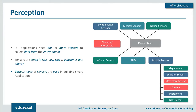RFID — radio frequency identification — gathers significant attention. Unlike a traditional barcode, it does not require line-of-sight communication between the tag and reader, and can identify itself from a distance without human intervention. RFID comes in two types: active tags, which have a power source, and passive tags, which do not. Near RFID uses a coil with AC current to generate a magnetic field; far RFID uses a dipole antenna to propagate electromagnetic waves, with tags also having a dipole antenna.